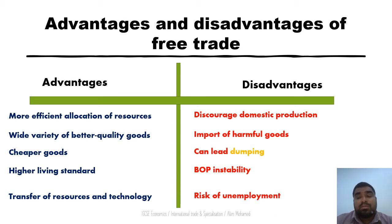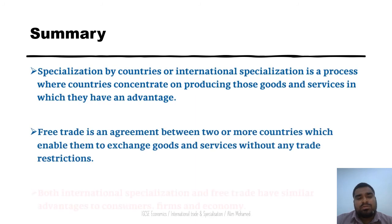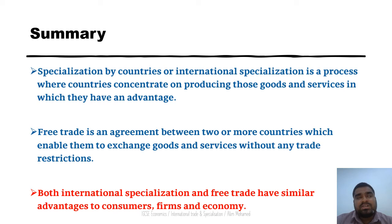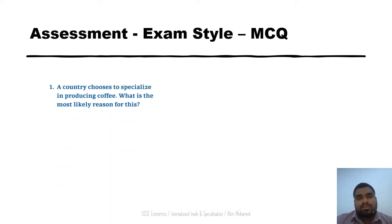Free trade could also lead to balance of payment instability. It could lead to domestic unemployment because people may demand more cheap imports rather than domestically produced goods. Now we can discuss both international specialization and free trade — their advantages and disadvantages. Let's also look at exam-style MCQs. One question asks: a country like Colombia uses free tools to specialize in producing coffee.